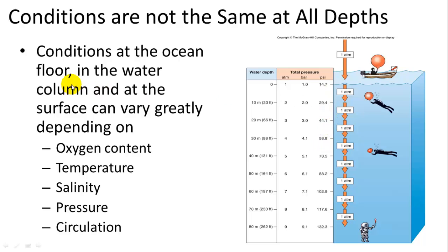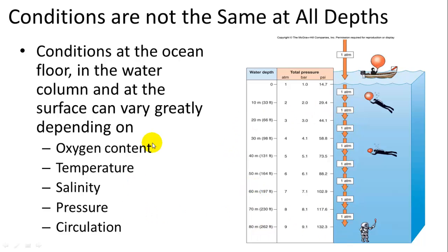Conditions within the ocean vary significantly with depth, including oxygen levels — there is actually one zone with almost no oxygen. Temperature, salinity, and pressure all change with depth. Pressure increases by about one atmosphere for every 10 meters: at the surface it's 1 atm, at 10 meters it's 2 atm, at 20 meters it's 3 atm, and so on.